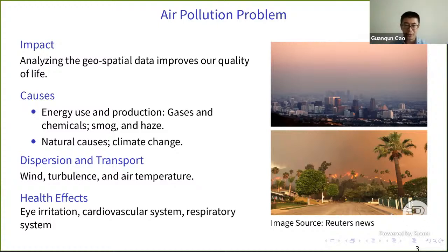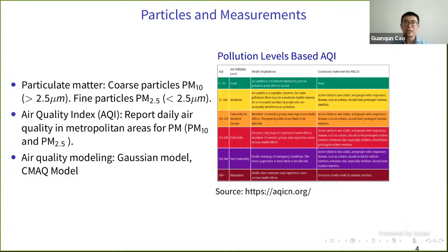The atmosphere is a medium for air chemical reactions, and the dispersion and transport of air pollution depends on wind, heat, turbulence, and air temperature. It has a heavy impact on our health — it can create eye irritation, heart and lung problems. Particles can be divided into two types: coarse particles bigger than 2.5 micrometers, and fine particles smaller than that.